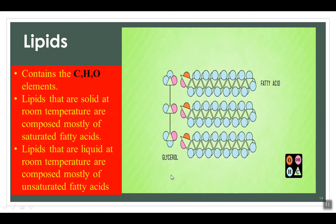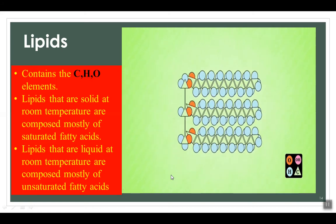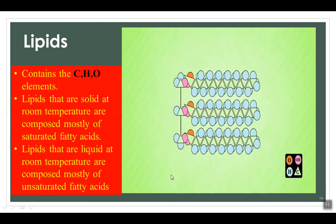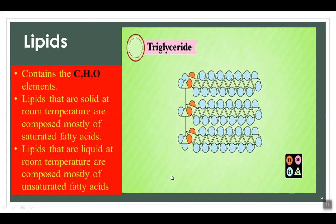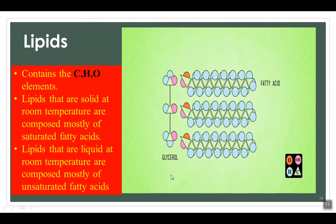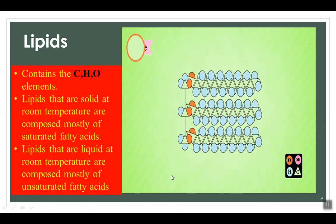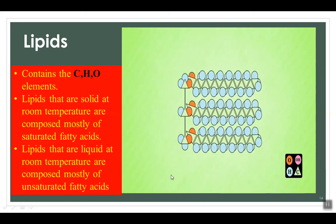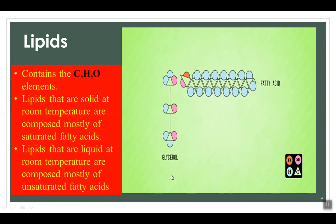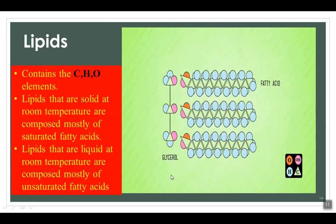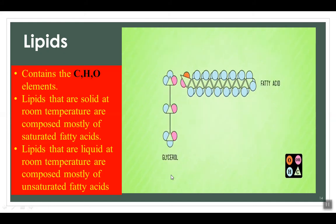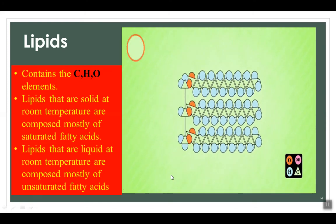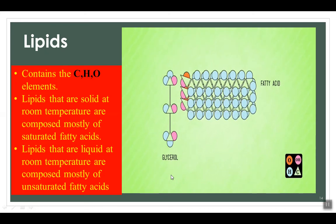Lipids contain the same three elements as carbohydrates — carbon, hydrogen and oxygen — but in different proportions, with much less oxygen than in carbohydrates. Fats and oils are lipids. Lipids are made up of two types of molecules: glycerol and fatty acids. There are two types of fatty acids: saturated and unsaturated. Saturated fatty acids are the ones that animals make — butter and lard are sources. These are solid at room temperature and are called fats. Plant-derived fatty acids are liquid at room temperature and are known as unsaturated fatty acids or oils.